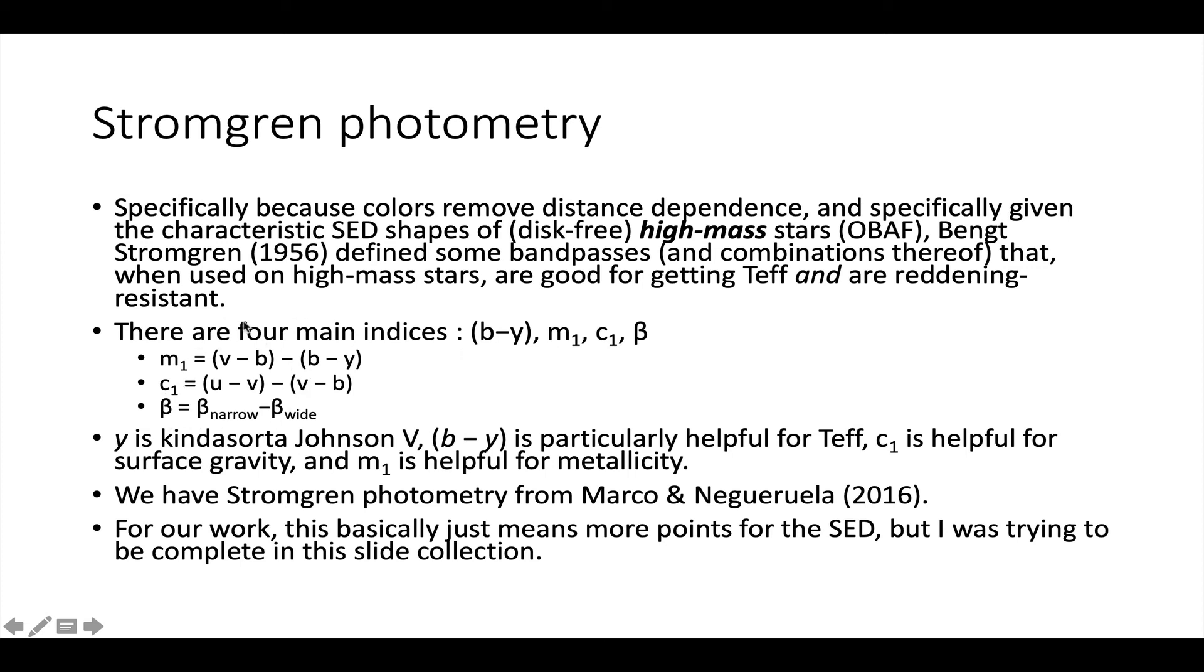These are the colors. They're actually, it's even more confusing because it's a difference of colors. Y you can kind of sort of think of as Johnson V. B minus Y helps you get effective temperature. C1 helps you get surface gravity, and M1 helps you get metallicity. We have Stromgren photometry from one literature paper in IC 417, which is why I'm bringing this up. For what we're doing, it basically just means more points for the SED, but I wanted to try to be complete in this slide collection.